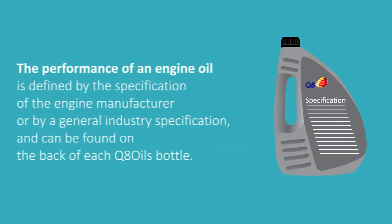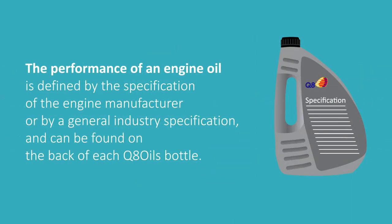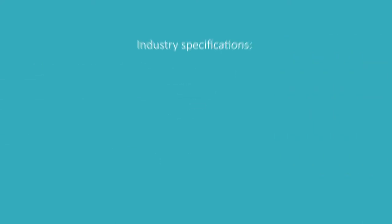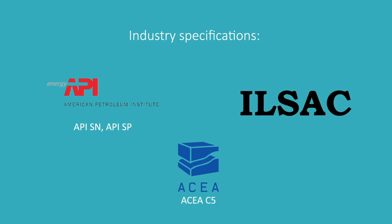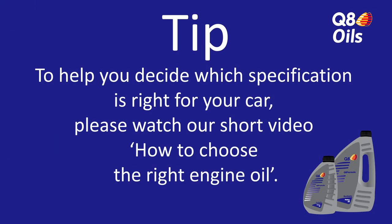The performance of an engine oil is defined by the specification of the engine manufacturer or by a general industry specification, and can be found on the back of each Q8 Oils bottle. Examples of industry specifications are API SN, ACEA-C5, ILSAC GF5, and GF6.